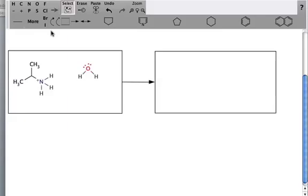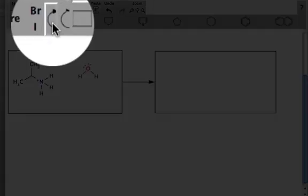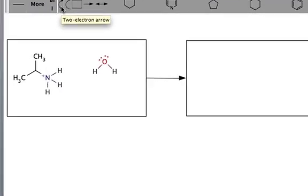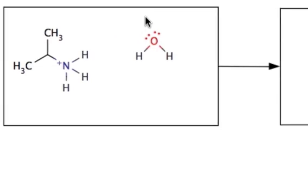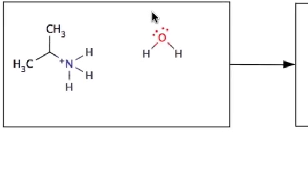Step 1 is click on the electron source. We'll click on this 2-electron arrow. Be sure you click on the 2-electron arrow and start on where the electrons come from. In this case, our base is going to be the lone pair on the oxygen of water.